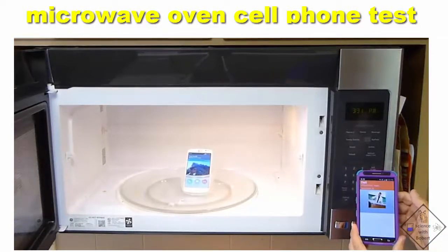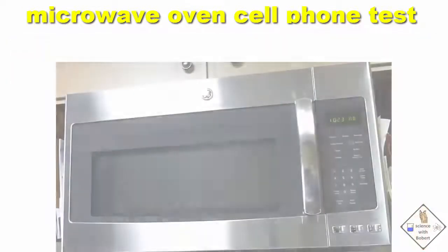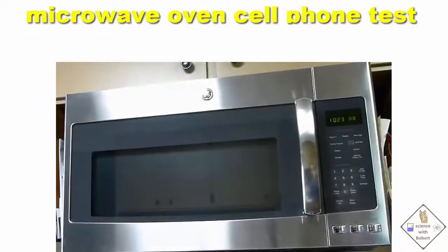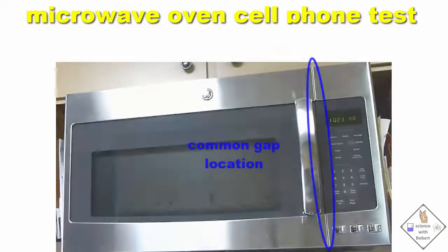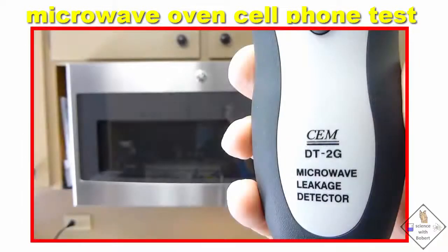It rang. What is going on? In fact, cell phones ring when placed in most microwave ovens because microwave ovens leak microwave radiation. Microwave ovens have gaps and holes, especially around the door, that are a lot bigger than honeybees. This is a microwave radiation detector, and let's see where the leaks are in this microwave oven.